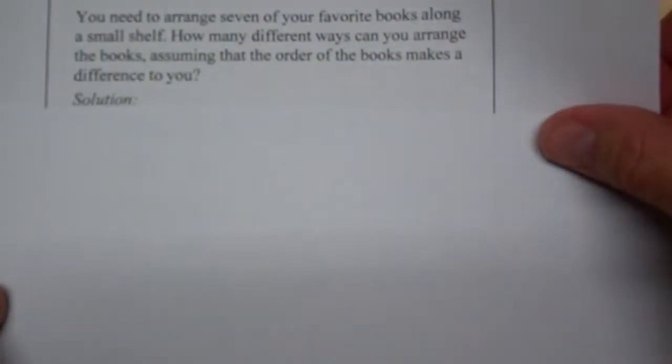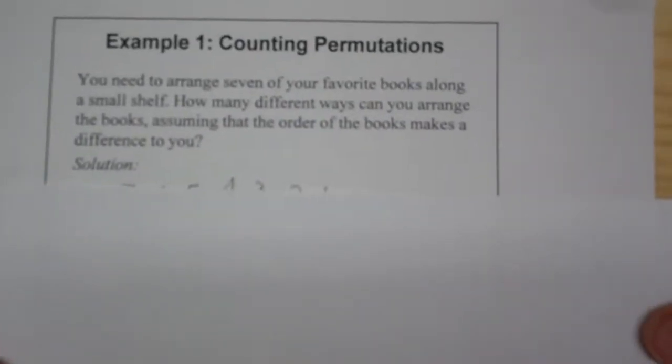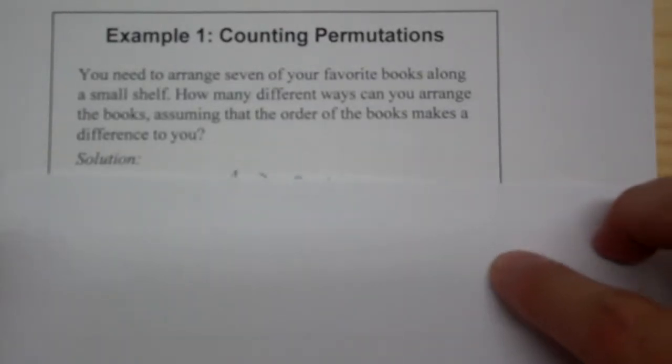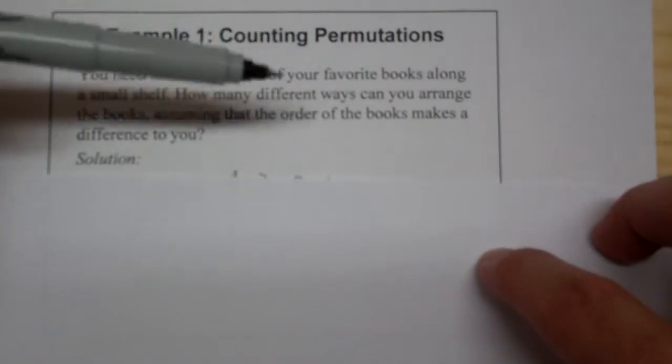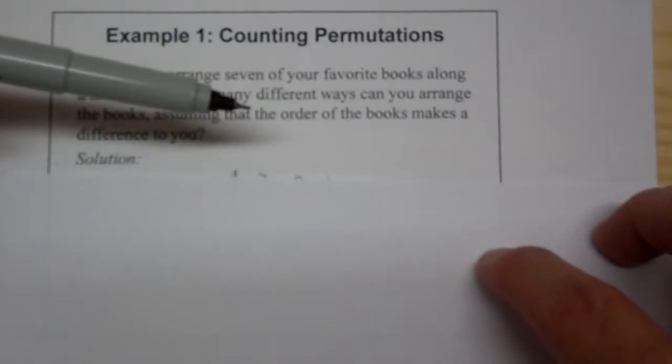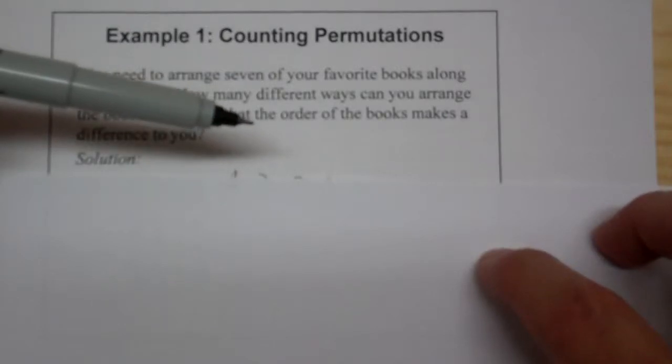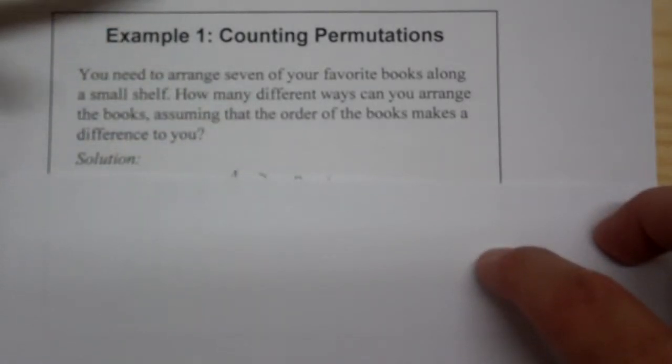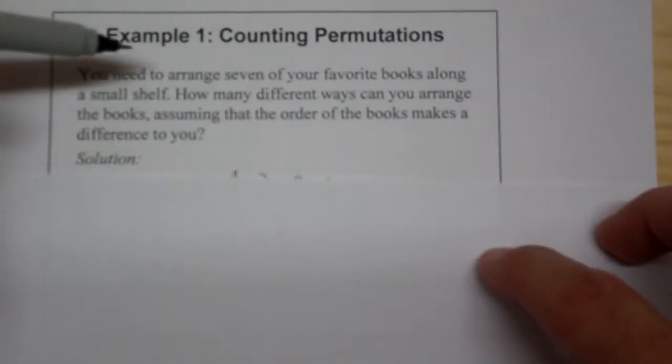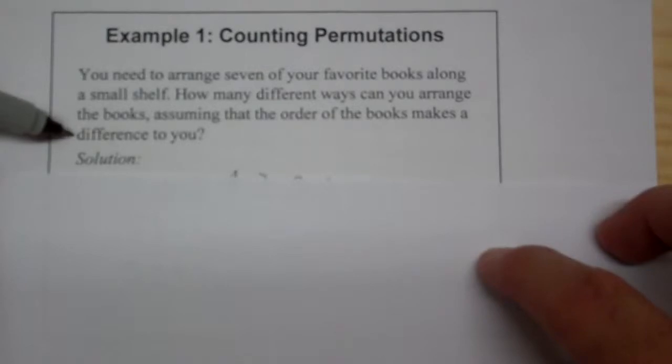So how am I going to use this with the counting principle? Here's our example number one. You need to arrange seven of your favorite books along a small shelf. How many different ways can you arrange the books assuming that the order of the books makes a difference to you? Let's say you want alphabetical order or by genre or chronological order or even by colors of the rainbow according to their spine or the Dewey Decimal System. Let's say it makes a difference.